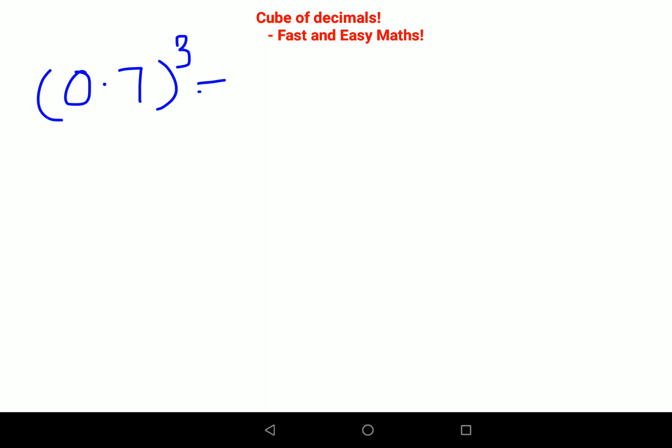First, always remember you will convert 0.7 as a fraction, so that becomes 7 upon 10. Now 7 cube is 343 and 10 cube is 1000. So 343 divided by 1000, your final answer is 0.343.